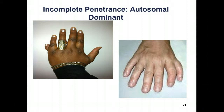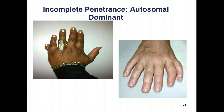On the left side of the slide, there is an individual of African descent with an extra pinky finger. This is quite common among African Americans, and typically when an infant is born with this extra digit, the doctor will tie it off with a string, preventing blood and oxygen supply, and the extra digit will fall off. If there's a bone in the extra digit, it typically won't fall off on its own and will require surgery. On the right is an individual appearing to be of Caucasian descent with a full extra digit. When we talk about incomplete penetrance with the autosomal dominant form of polydactyly, we are usually referring to the situation shown on the left.